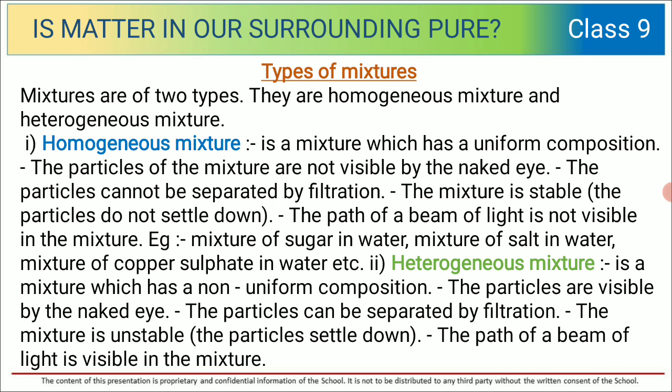What about heterogeneous mixture? It is a mixture which has non-uniform composition — that means the particles are not mixed uniformly. The particles are visible to the naked eye. The particles can be separated by filtration, unlike in homogeneous mixtures where they cannot. The mixture is unstable because the particles settle down. The path of a beam of light is visible in the mixture.